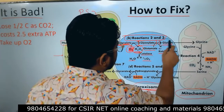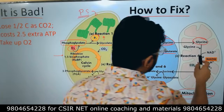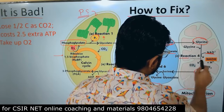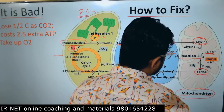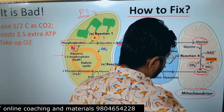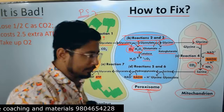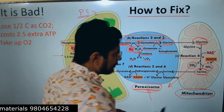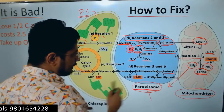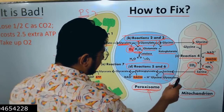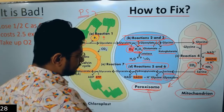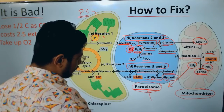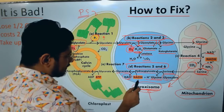Glycine is then transferred into the mitochondria, where it is oxidized to serine in reaction four, reducing NAD+ to NADH. In this conversion of glycine to serine, CO2 is also produced and ammonia is also produced (deamination). One carbon is released in this step. The serine is then transferred back to the peroxisome for reactions five and six, where glyoxylate is converted to glycine and serine is converted to hydroxypyruvate.